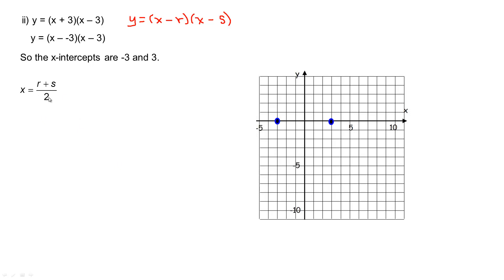And we use this to find the equation for the axis of symmetry or the vertex's x-coordinate. So we'll put negative 3 in place of r and 3 in place of s. Negative 3 and 3 are opposites, so they add to 0. 0 divided by 2 would be 0. So the vertex's x-coordinate is 0. So we find the y-coordinate by putting 0 in place of x in the original equation. So 0 goes here and 0 goes here. 0 plus 3 is 3. 0 minus 3 is negative 3. And those would multiply to give you negative 9. So the vertex's coordinates would be at 0, negative 9. So we'll put a dot here at 0, negative 9.